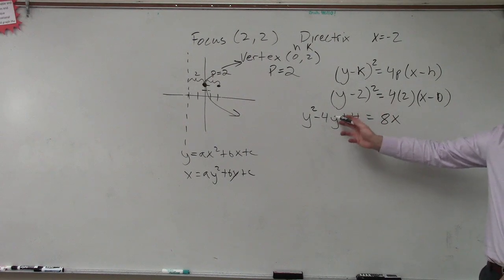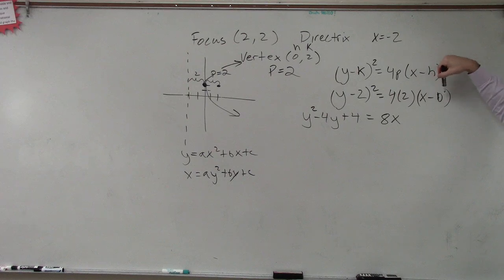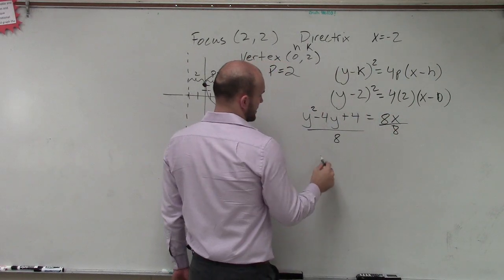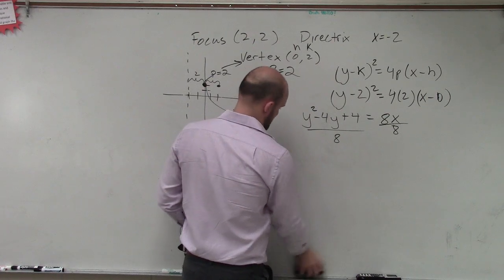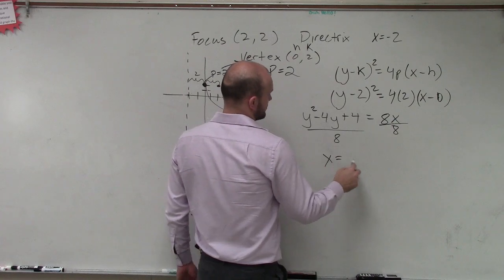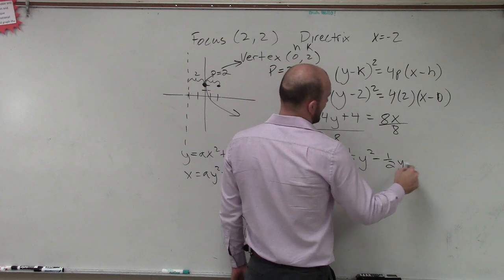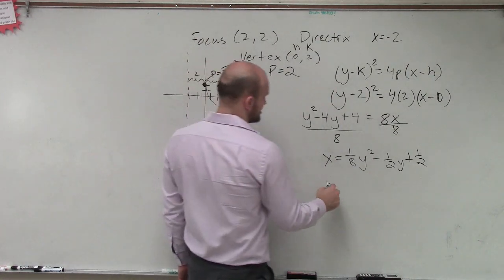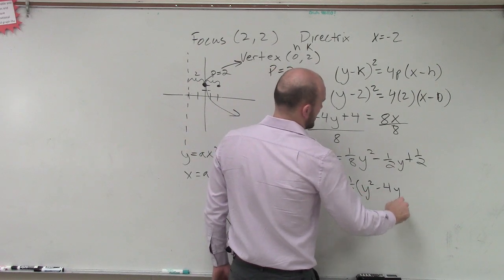Alright. This squared out is y² - 4y + 4. Then, 4 times 2 is 8, x minus 0 is just x, so 8 times x is just 8x. Then, let's divide by 8, so I get x equals 1/8 y² - 1/2 y + 1/2. Or, you can do it without fractions, you can say x equals 1/8 (y² - 4y + 4).